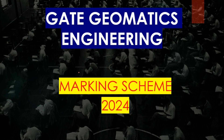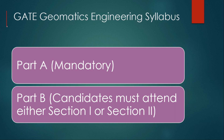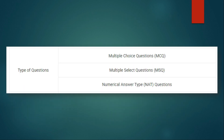Hello everyone, welcome back to my channel Geomatics Engineering. In today's video we are going to discuss the marking scheme for the GATE 2024 examination. The syllabus is divided into two parts: Part A, which is a mandatory section, and Part B, which is divided into two sections where the candidate must attempt either Section 1 or Section 2.